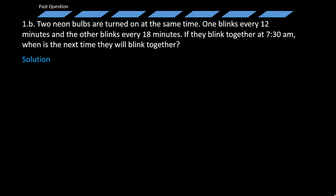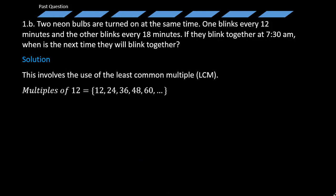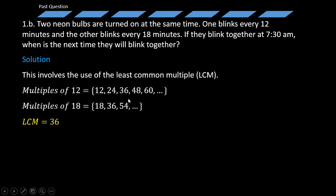To know when they blink together, we look at the multiples of both 12 and 18, and find the first common multiple — that is our least common multiple. The multiples of 12 are: 12, 24, 36, 48, 60, and so on. The multiples of 18 are: 18, 36, 54, and so on. You get to realize that the LCM is simply 36, because 36 appears as the first common multiple for both 12 and 18. So they are going to blink together again after 36 minutes.